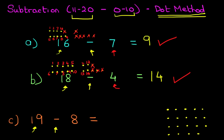Go back to the question. We are subtracting. We're going to do minus. So we're going to cross out some of the dots. How many are we going to cross out? It's 19 minus 8, so we're going to cross out 8 dots.